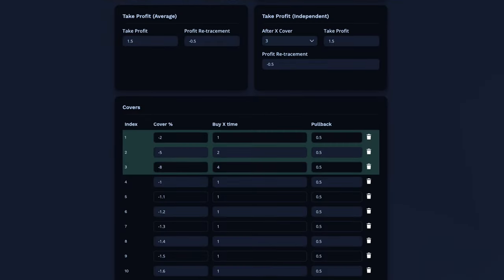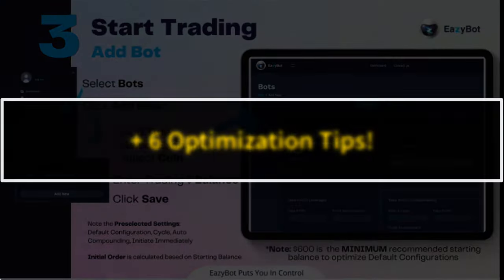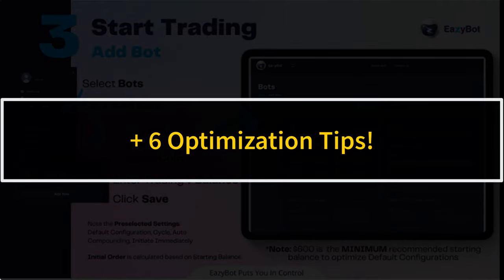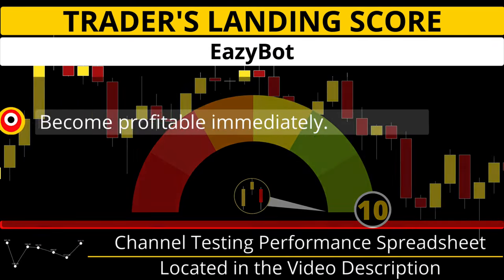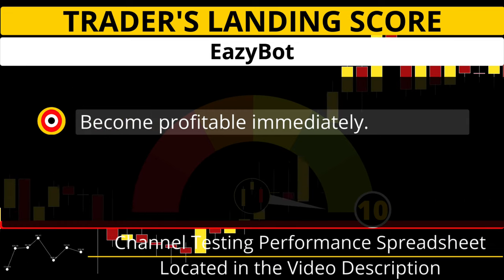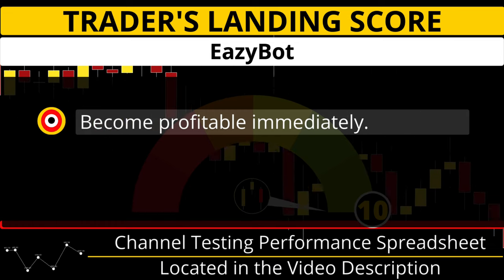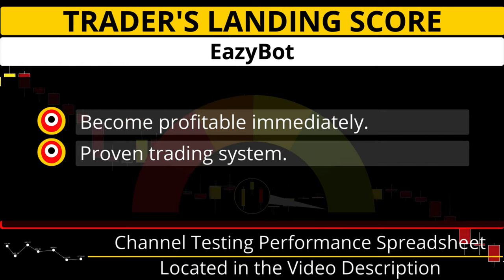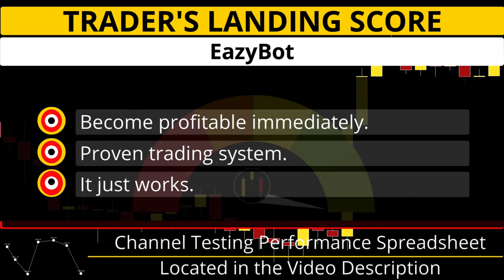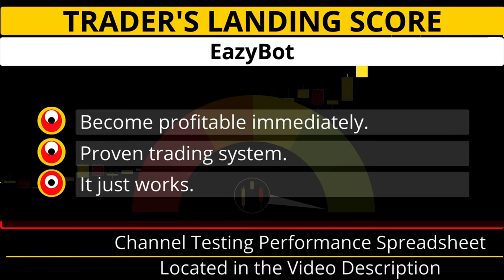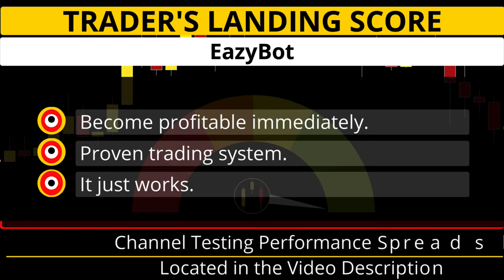Further down the screen there are more settings that I do not recommend playing with unless you fully understand how these variables will affect the bot's performance. I give this system a Trader's Landing score of 10 because most of my viewers are newer to intermediate traders and this will get them profitable immediately. The EasyBot algo is a tried and proven trading system that provides consistent results, and it requires very little user attention or intervention — it just works.